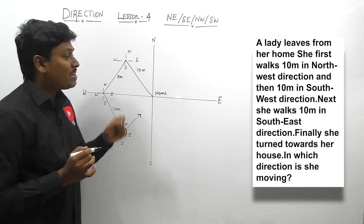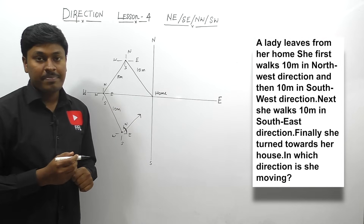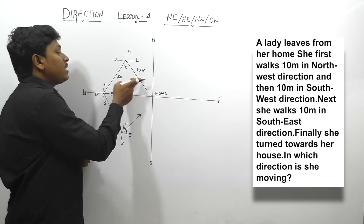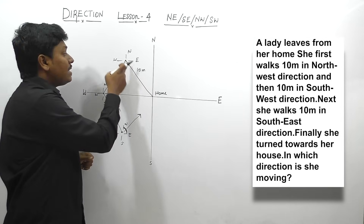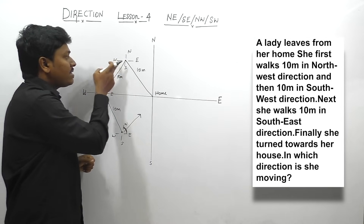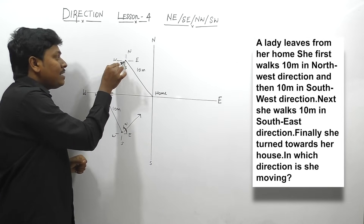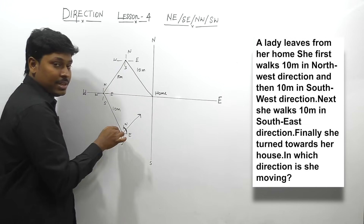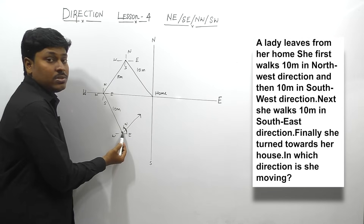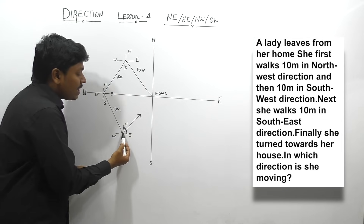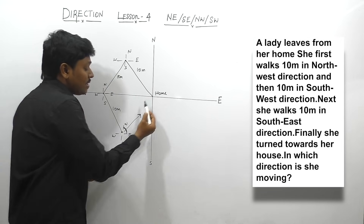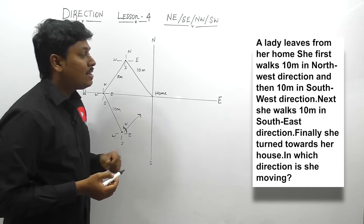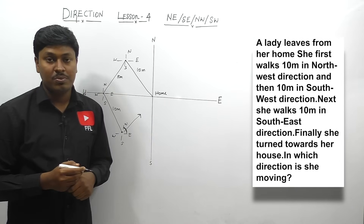So the answer for question number 2 will be north-east. The girl covers north-west 10 m, reaches a point, then 10 m towards south-west, then from that point 10 m towards south-east. Finally she turned to her house, and from that point she will be walking in north-east direction. So north-east is the answer for question number 2.